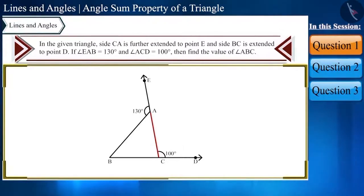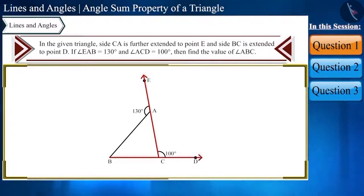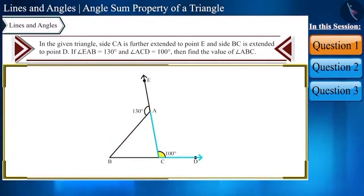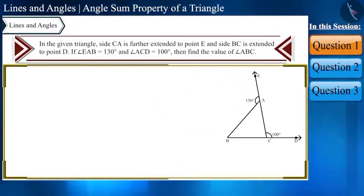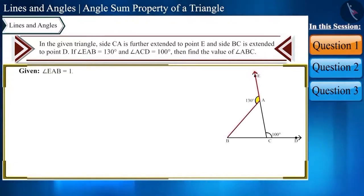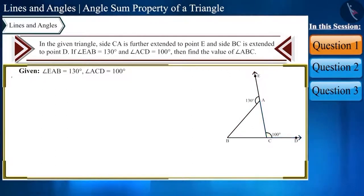In the given triangle, side CA is further extended to point E, and side BC is extended to point D. If angle EAB equals 130 degrees and angle ACD equals 100 degrees, then find the value of angle ABC. Let us first look at the angles for which the values are given: angle EAB equals 130 degrees and angle ACD equals 100 degrees.